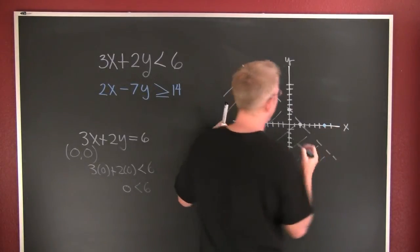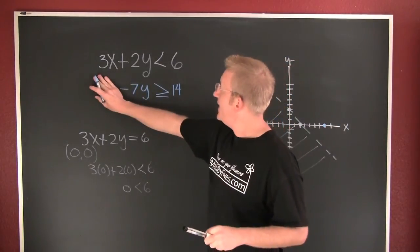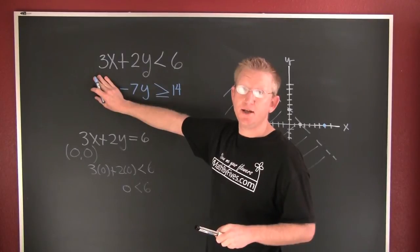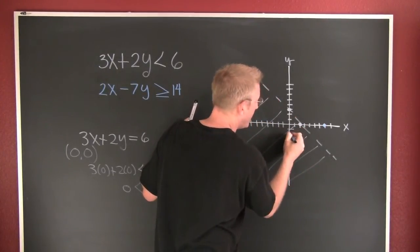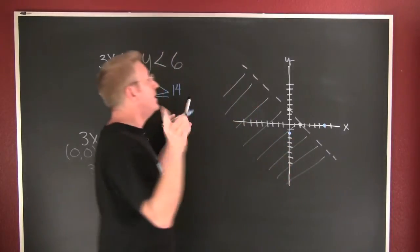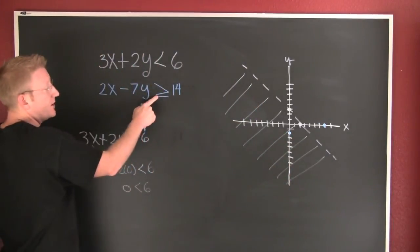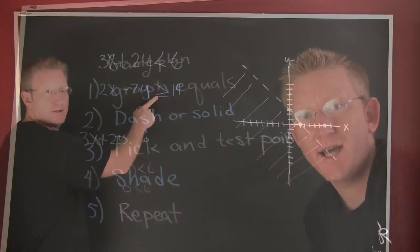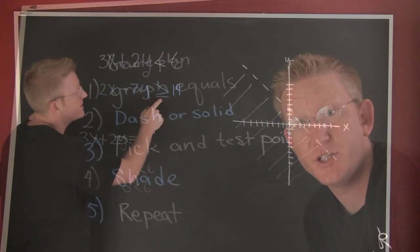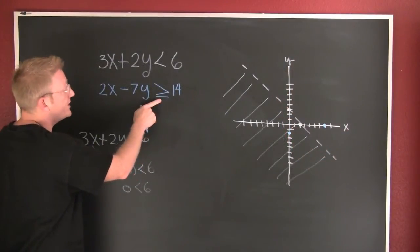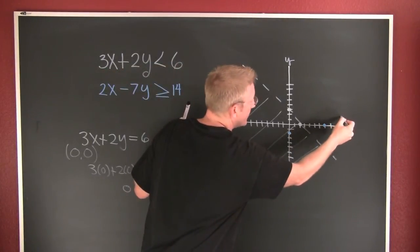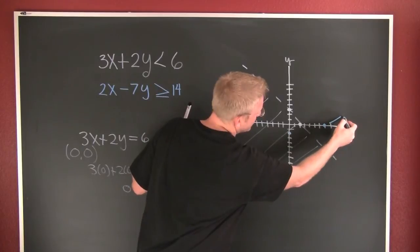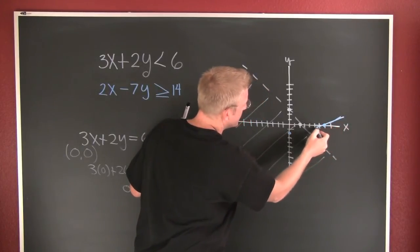If I let x be zero, y is going to be a minus two, so then y is going to be a minus two. Now is this one going to be solid or is it going to be dashed? This one's going to be solid because of the or equals to, so then I connect the dots.